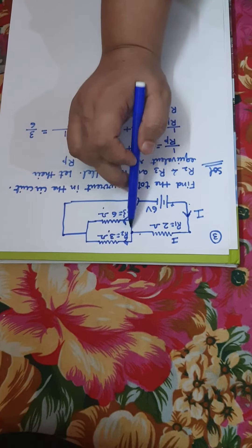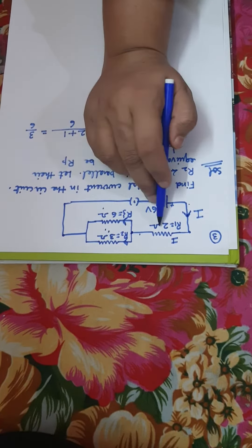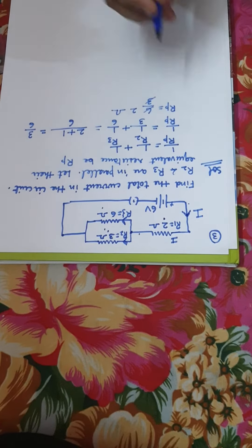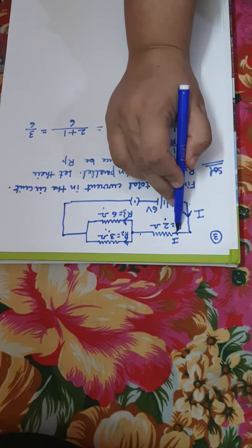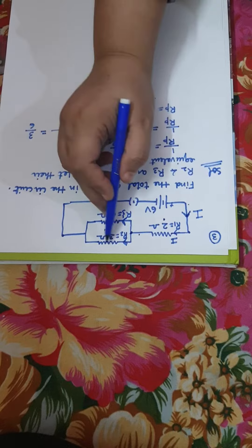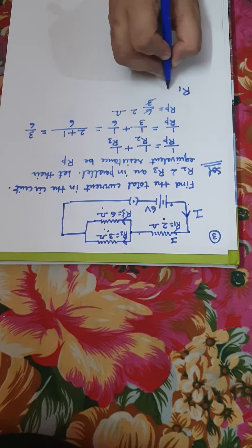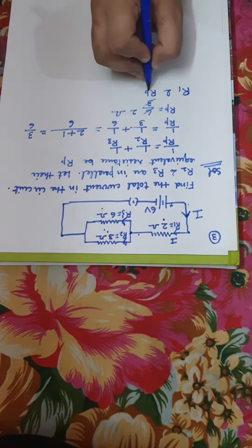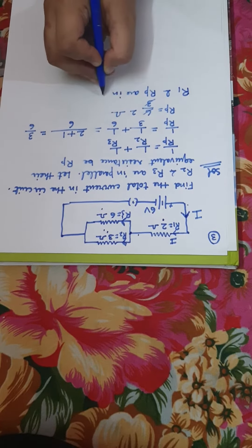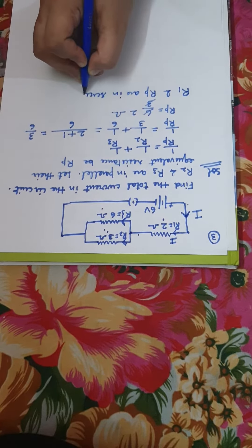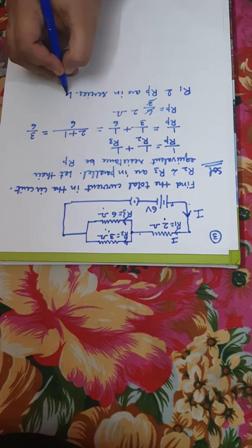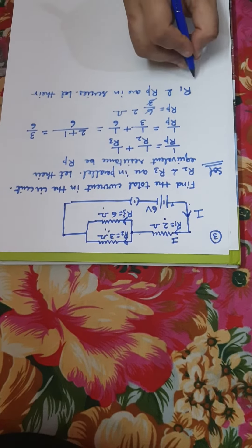And their parallel combination Rp is in series with R1, because the same current will pass through R1 and their parallel combination Rp. So we can write that R1 and Rp are in series.